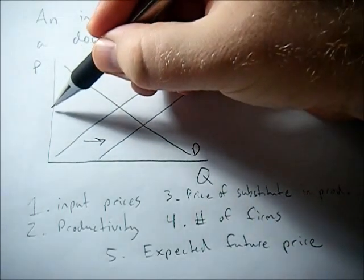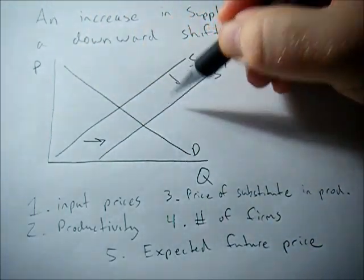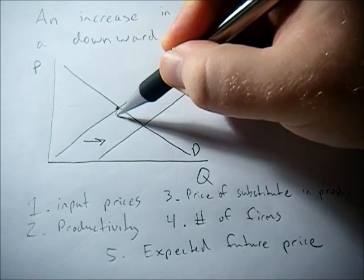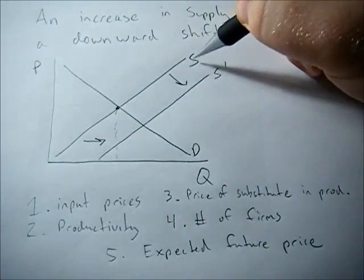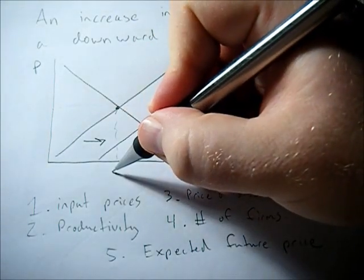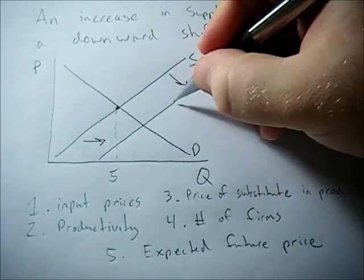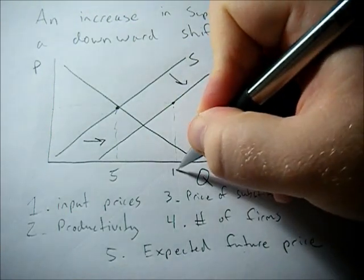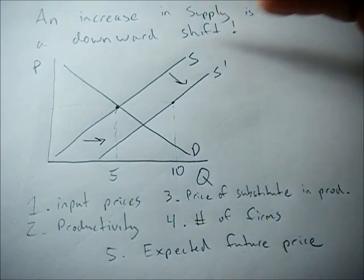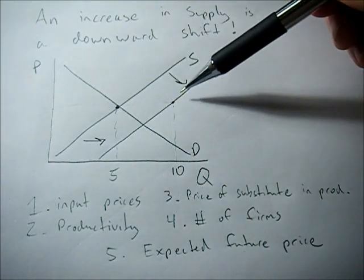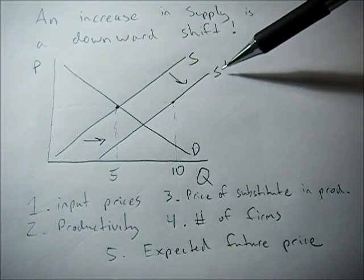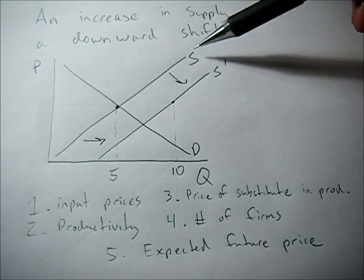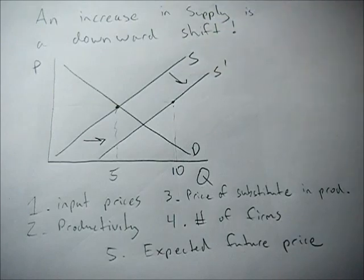Think of holding price constant. The quantity supplied on this supply curve would be, say, 5. But at the same price, the quantity supplied after an increase in supply would be 10. So use this little price check to make sure you shift your supply in the right direction. An increase in supply is a downward shift.